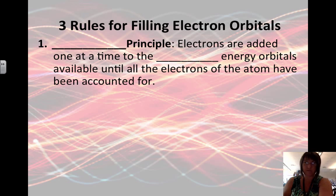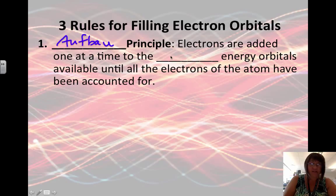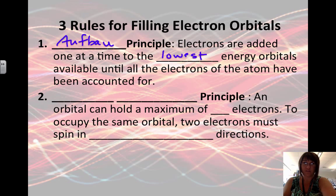Let's go over these rules. The one that we follow first is the Aufbau principle. This means electrons are added to the lowest energy orbital that's available until all the electrons of the atom have been accounted for. So we start with the lowest energy and build up to the highest.